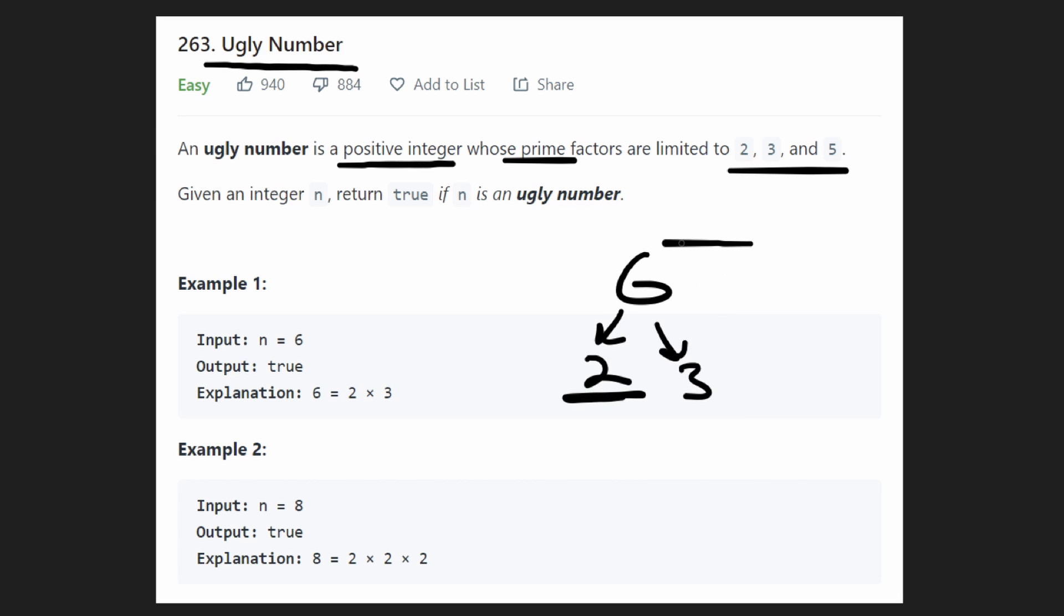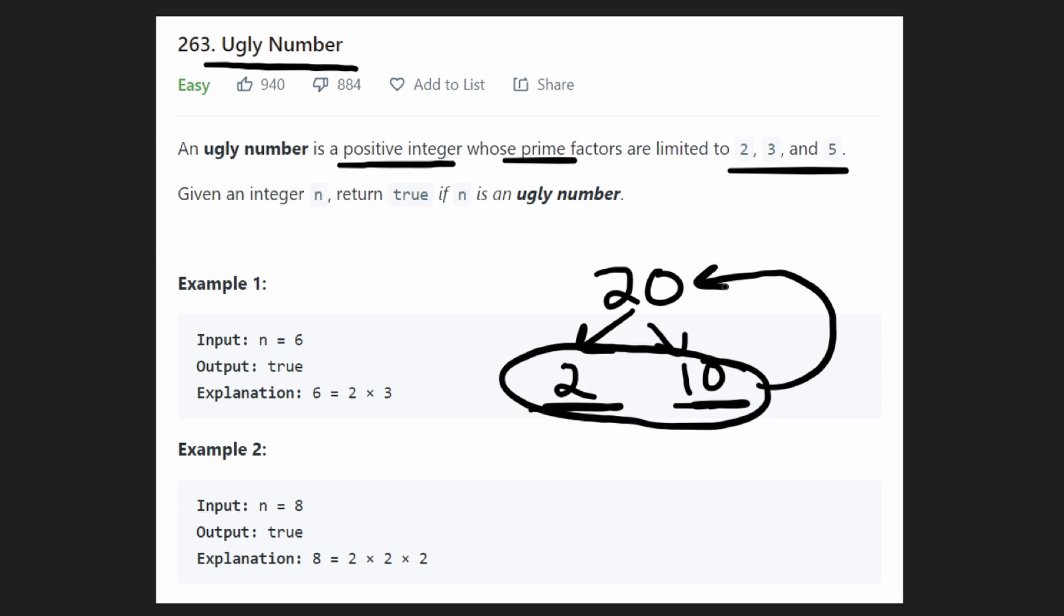So we can see that this whole idea of prime factorization is definitely going to be useful in determining if a number is ugly or not. Let's keep going. So let's take another example, 20. Let's try to prime factorize this number. You know, we can take 2 and 10, right? So now we've gotten some factors. If we multiply these two, we'll get 20, right? So these are factors of 20.